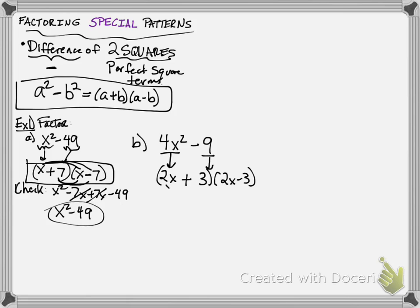If you FOIL that out, you're going to get your 4x squared. And the middle terms will cancel because of the plus and the minus sign. And then 3 times negative 3 is negative 9. So you can check that if you want. But that's all you would get for b.